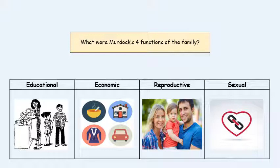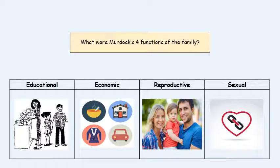The economic function is the fact that the working adults in the family are providing stability and security for all of its members — housing, food, clothing, cars, shelter, etc. The argument in Murdoch's four functions is that the nuclear family is better placed for doing this than a lone parent family, because you are able to pool more resources together.